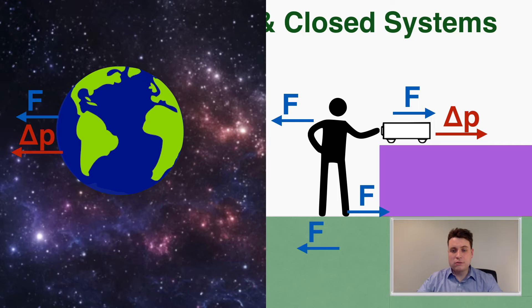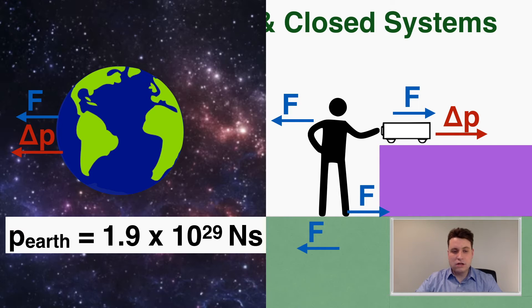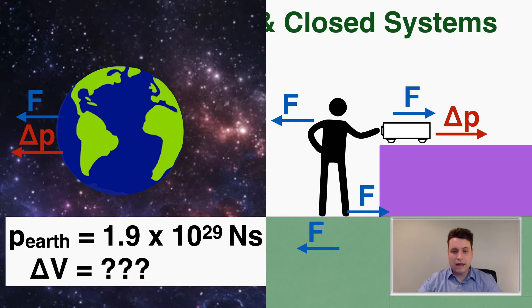The reason why the earth is so much less affected is because its momentum is already so gigantic. I did a calculation and found that earth's momentum is about 1.9 times 10 to the 29th newton seconds. The earth is so big that a small impulse, like the impulse that a cart receives, would barely affect its velocity at all — so we can't measure the change in velocity of earth. It's just too small on such a big planet to really measure.